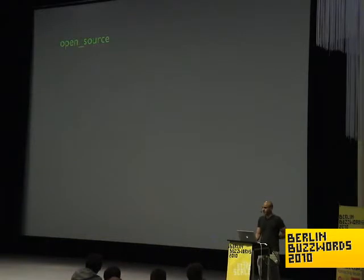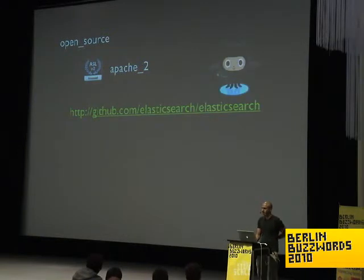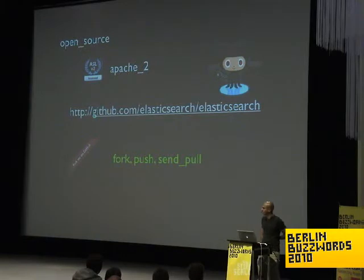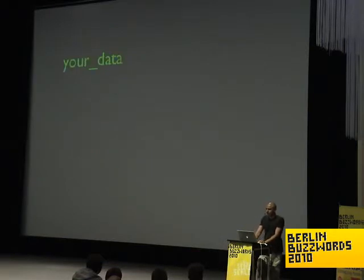Elasticsearch is Apache 2 licensed and hosted on GitHub, so the idea is that you can fork, push, pull, send whatever open issues. Hopefully we'll get some cooperation for the project. I'm going to cover three main topics today.